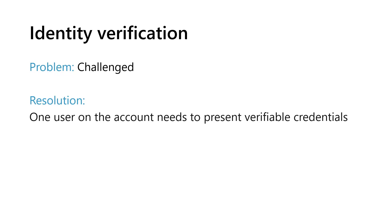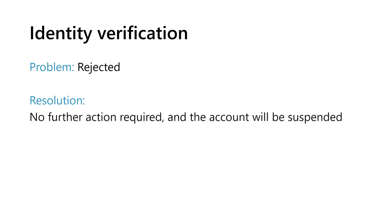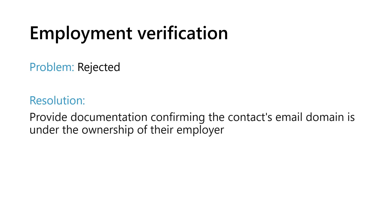If identity verification is rejected and you don't see a Fix Now button, there's no further action required and the account will be suspended. If employment verification is rejected, the primary contact — normally your global or account admin — must provide documentation confirming the contact's email domain is under the ownership of their employer. For further assistance, go to your profile page for MPN, CSP, or developer to upload more proofs through the account verification pane.